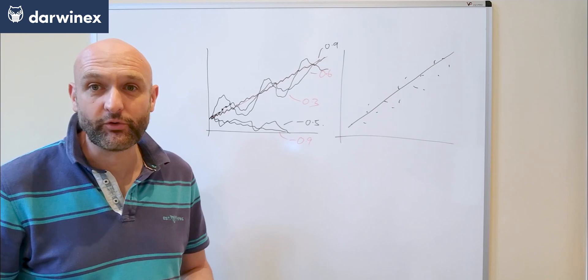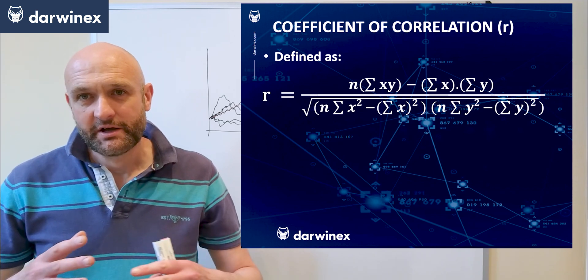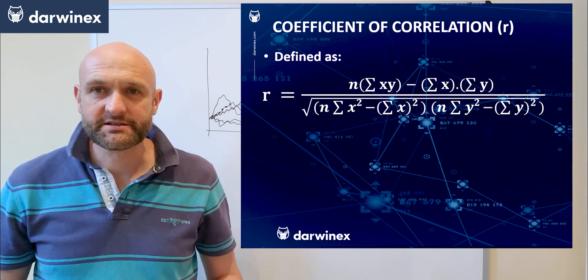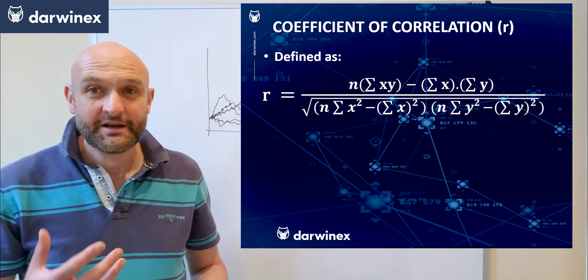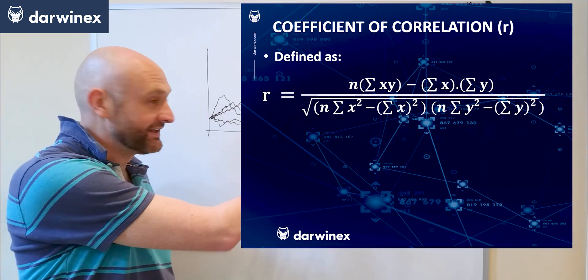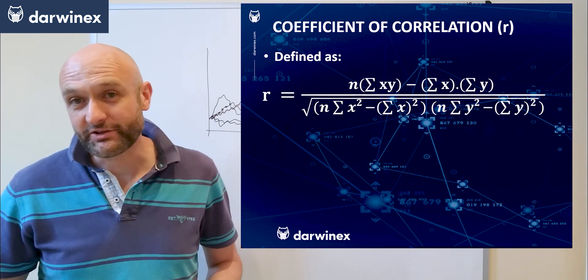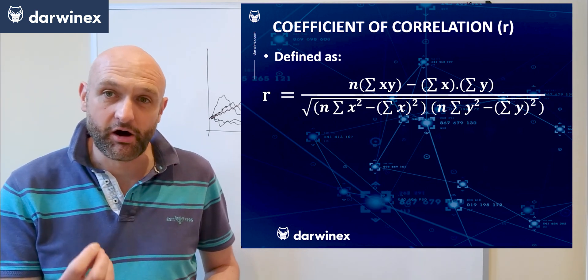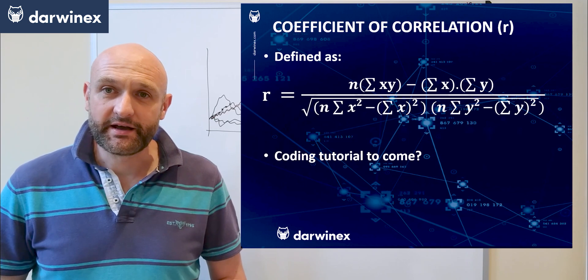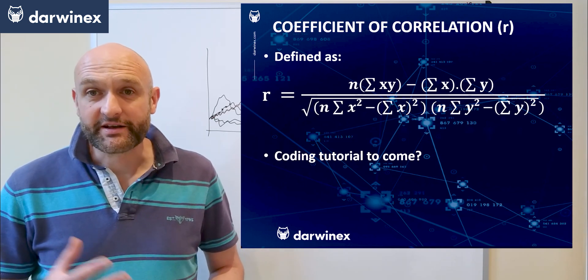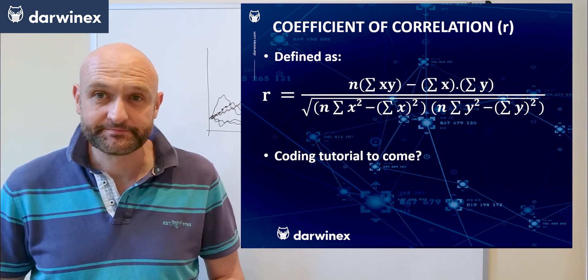This is the calculation for the coefficient of correlation. Don't let this phase you—it does look fairly complex but it's very simple to create in code. Basically, as long as you can create the sum of all of your x values, the sum of the y values, and the squared equivalents, it's very simple to plug those into this equation to get our r value. I might actually have this as the subject of a future episode in my advanced MQL coding series, where I can show you how simple it is to code this particular performance metric in MQL5.